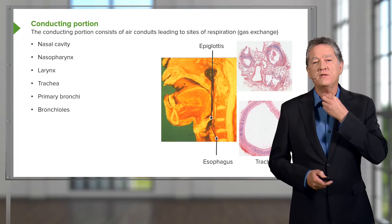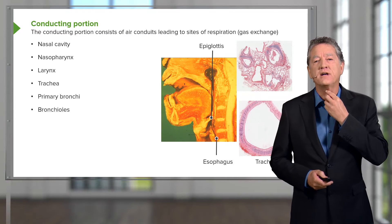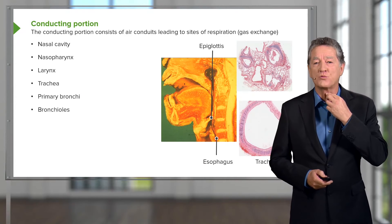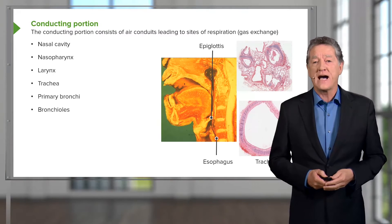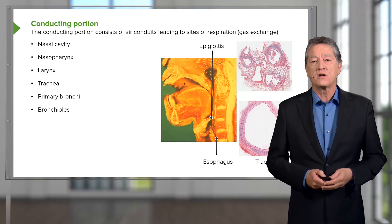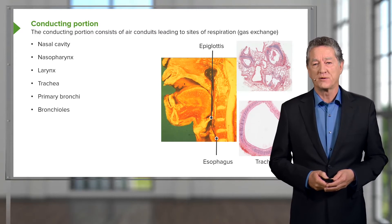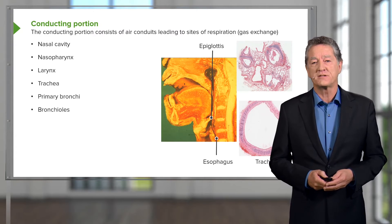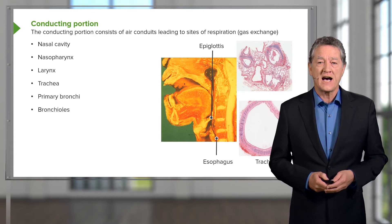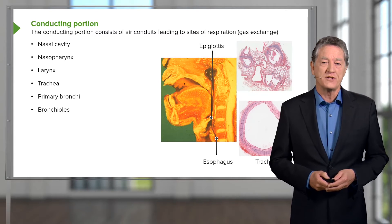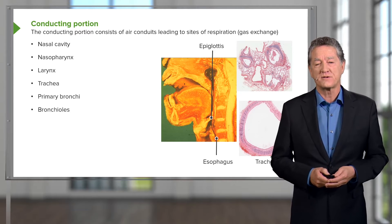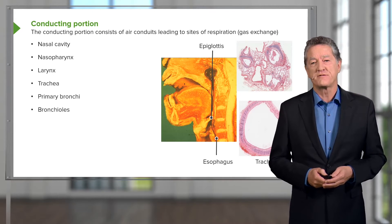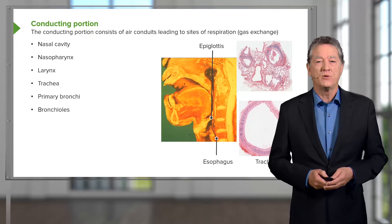When we swallow — if you put your fingers around your trachea or near your larynx and swallow — you can feel the larynx moving upwards. That closes off the airway during swallowing, because the epiglottis is an elastic cartilage flap that, when the larynx is lifted, closes off across that epiglottis. Food then passes down the esophagus, not down the airways.